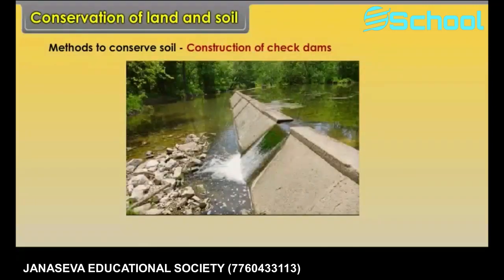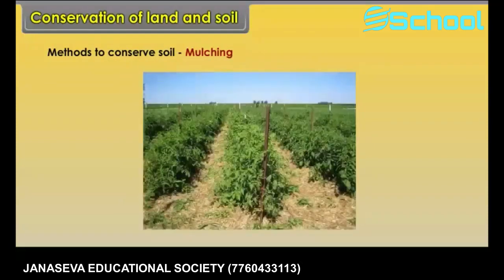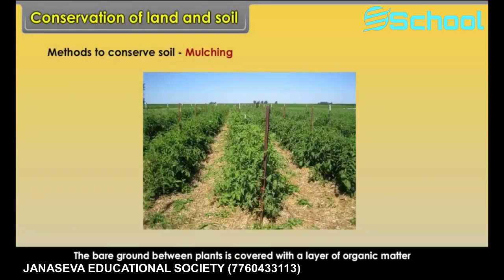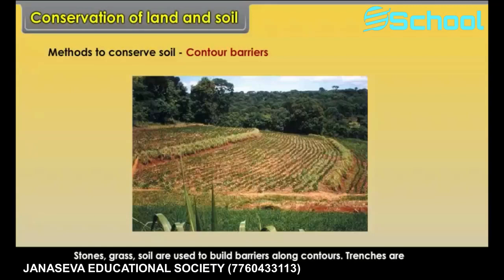Construction of check dams. Soil erosion can be checked by constructing check dams, which help to prevent the speed of gullies. Mulching — the bare ground between plants is covered with a layer of organic matter like straw, which helps to retain soil moisture. Contour barriers — stones, grass, and soil are used to build barriers along contours, and trenches are made in front of the barriers to collect water.